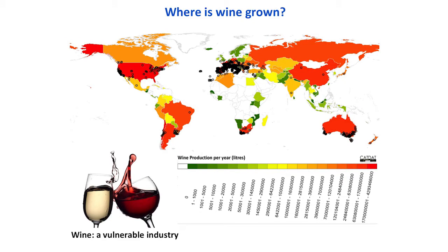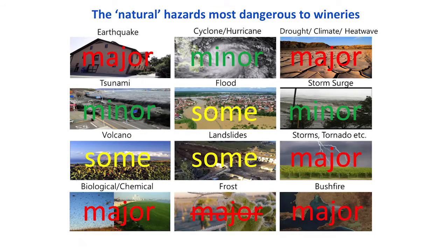Wine is a very vulnerable industry, and it's grown in over 140 countries globally. Very interestingly, it correlates very closely to the Human Development Index. The highest production in the world is in Italy and France. However, it is an extremely vulnerable industry to natural disasters — earthquake especially, drought and climate, storms and tornado, bushfire, and biological and chemical hazards.